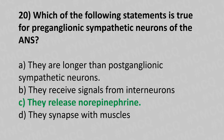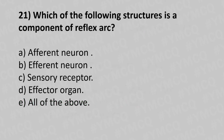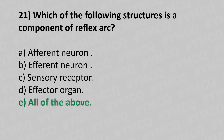Question 21: Which of the following structures is a component of the reflex arc? Option A: afferent neuron. Option B: efferent neuron. Option C: sensory receptor. Option D: effector organ. Option E: all of the above. The answer is Option E — all of the above.